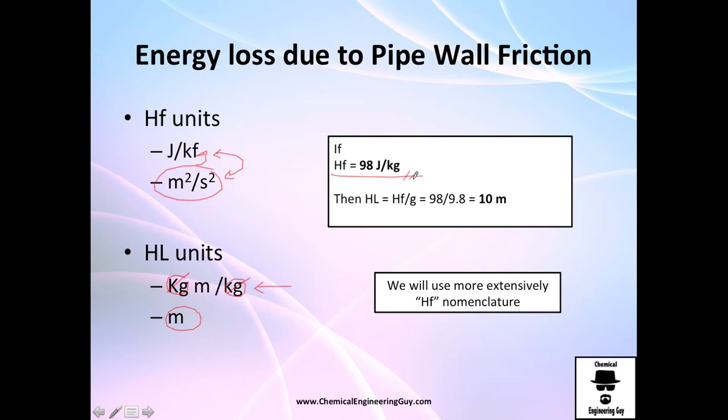So for example, if I were to tell you I got 98 joules per kilogram, then if you wanted to show me how many meters is that, you will need to divide HF by gravity. So 98 divided by 9.8 will give you ten meters. So this means essentially that these ten meters, well you just lose them, so you need to get the tank ten meters below in order to satisfy this friction.